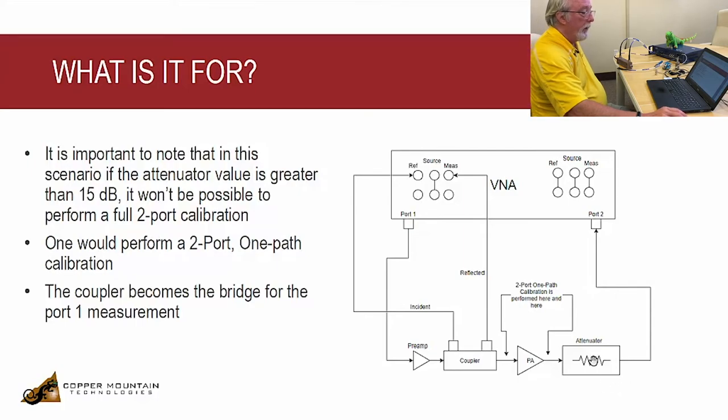If you need a big attenuator, say 20 or 30 dB, you can calibrate but you have to do two-port, one-path calibration. And that's one of the choices that's built into the VNA. You would select that and it would do a full one-port calibration at this point. And it would do basically a through calibration through here. And the attenuation would be removed and you'd have a pretty good measurement. Not quite as good as a full two-port, but not too bad either. So this is how we measure using an external bridge in the midst of a signal chain when we only want to measure perhaps the return loss of a PA.